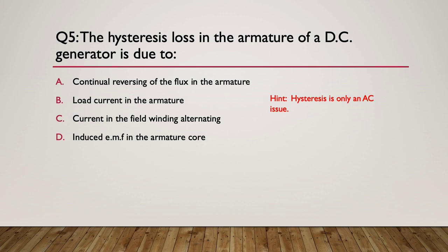Here's your hint. Hysteresis is only an AC issue — things are changing backwards and forwards. So we're in a DC machine — are things changing backwards and forwards? The answer is the continual reversing of the flux in the armature. Remember, the commutator is switching the current and reversing it the other way — so it comes out the same way at the terminals, but it's reversing in the armature — effectively creating a kind of pulsating AC, and it creates hysteresis losses.